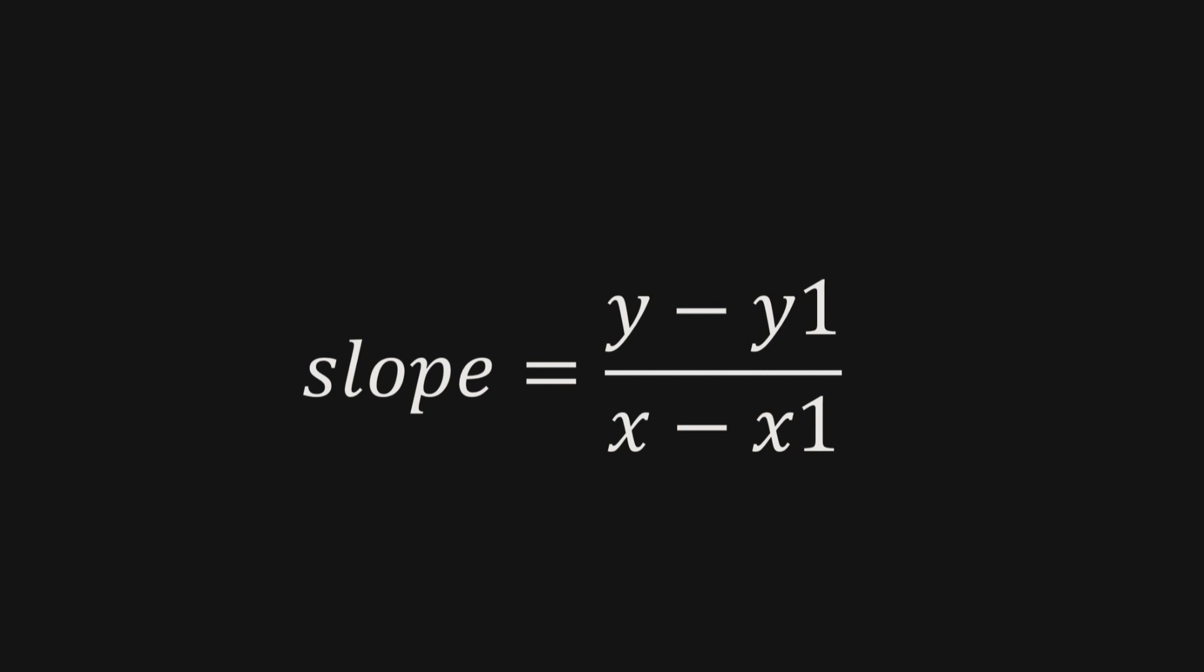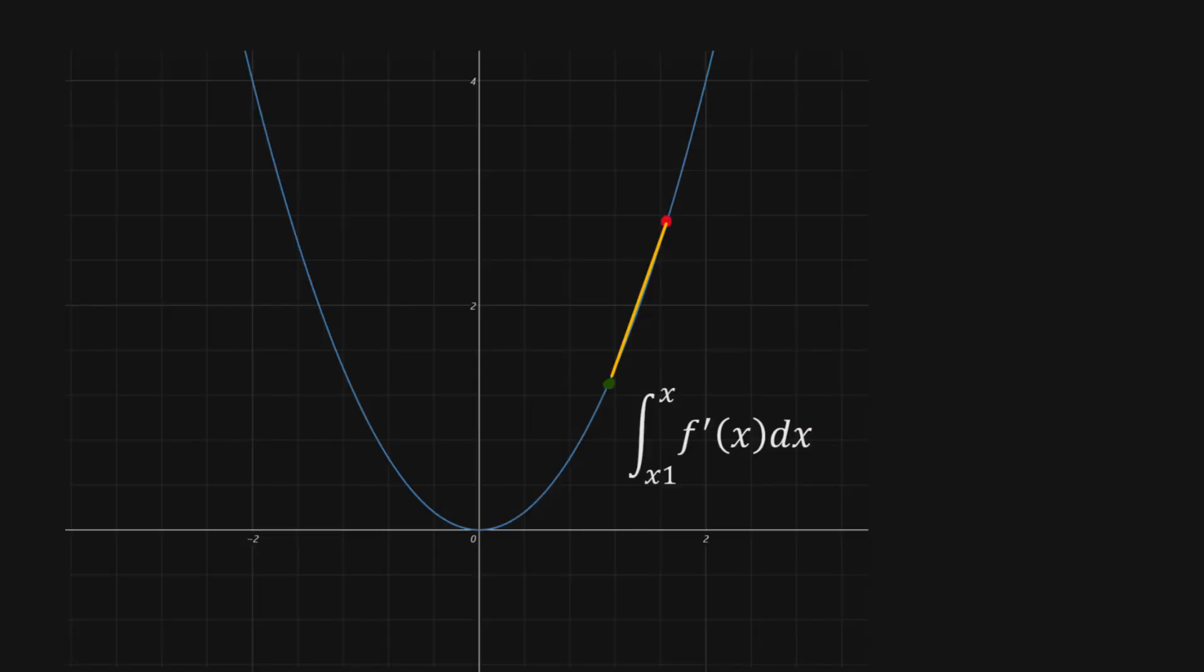And now we're going to find the relation of average slope between these two points using integration. And now what we're going to do is we're going to integrate the slope of this function between the points p and q.